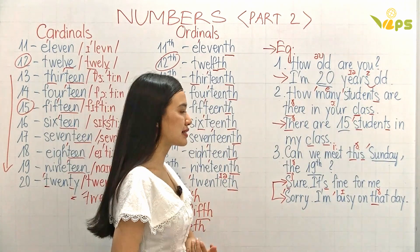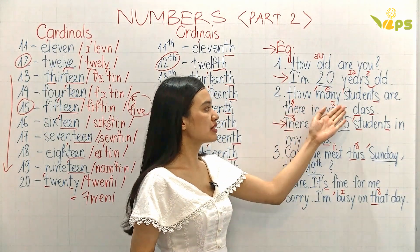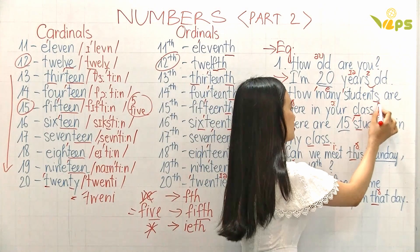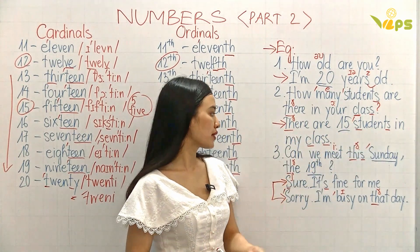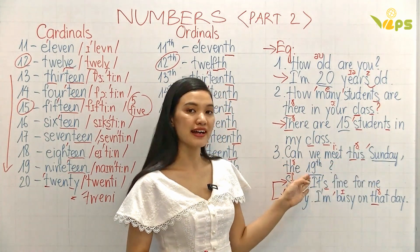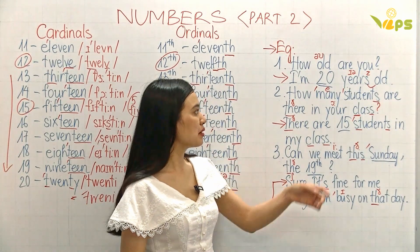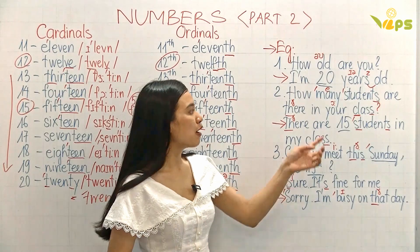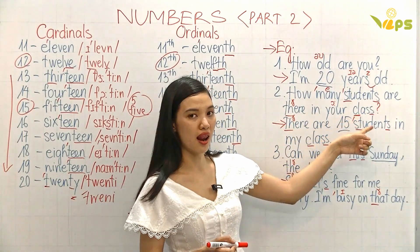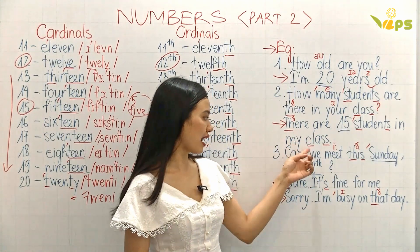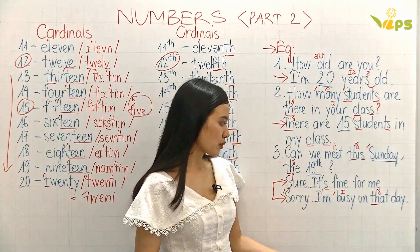Now let's go to examples. How old are you? I'm 20 years old. How many students are there in your class? There are 15 students in my class. Can we meet this Sunday the 19th? Sure, it's fine for me. Sorry, I'm busy on that day.